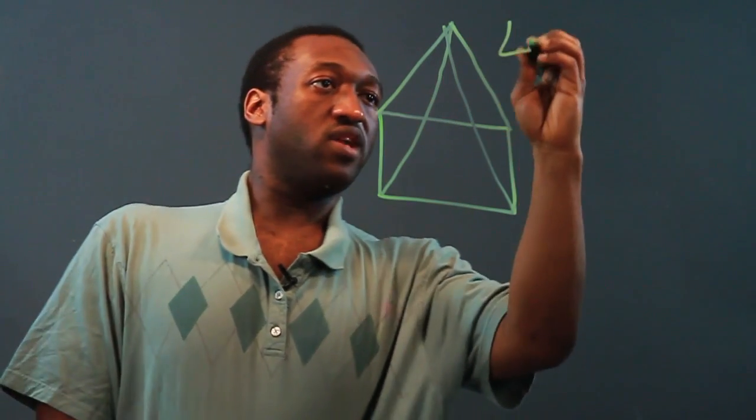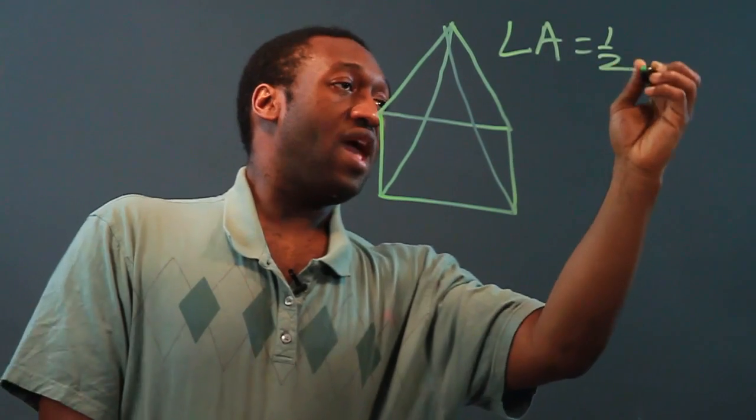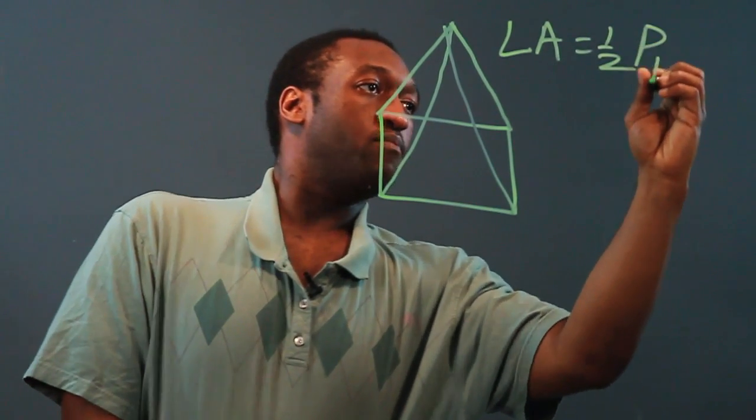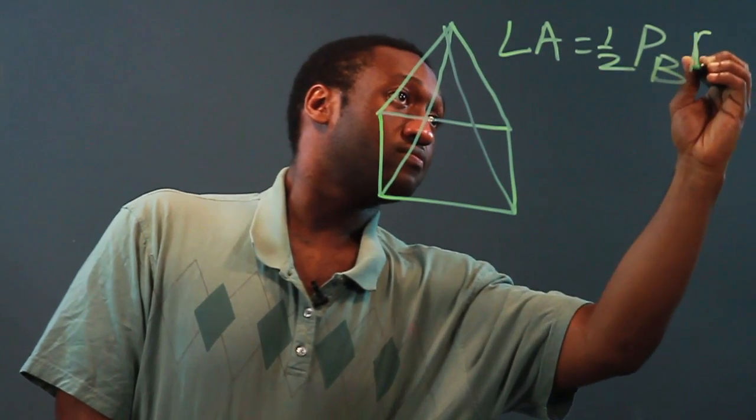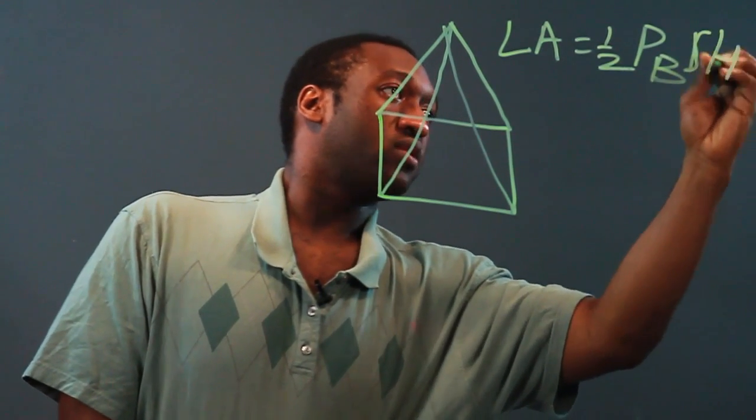Now the lateral area is going to be one half the perimeter of the base times the slant height. I'll mark that as SH.